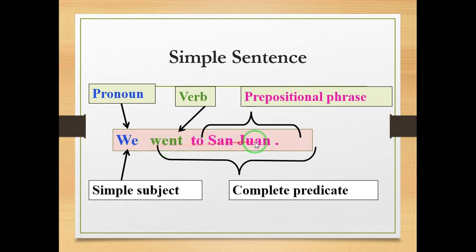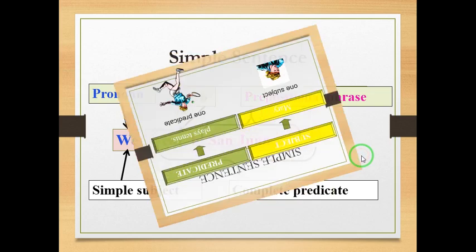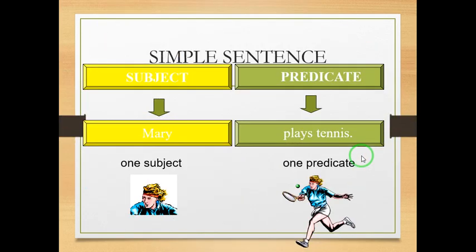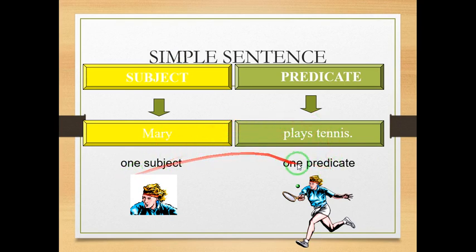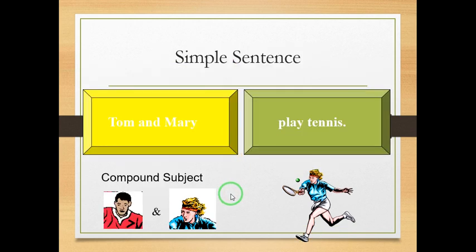A simple sentence has one subject and one predicate. For example: We went to San Juan yesterday. We is the simple subject and the complete subject at the same time, because we draw the slash before went, which is the verb. All that comes after the slash is the complete predicate. One subject plus one predicate make a simple sentence.